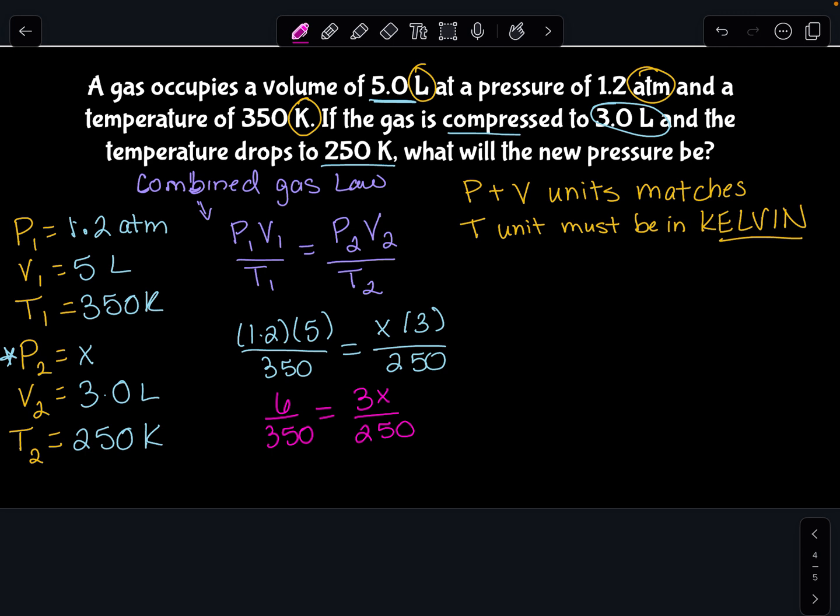Step two is going to be doing some cross-multiplying to get everything up to the top line. So I'm going to do 250 times 6, which is going to give me 1,500. And then I'm going to do 350 times 3X, which is going to give me 1050X.